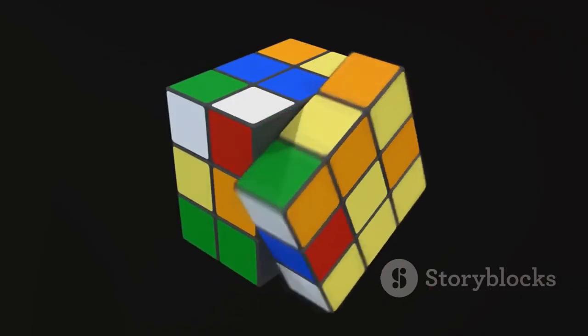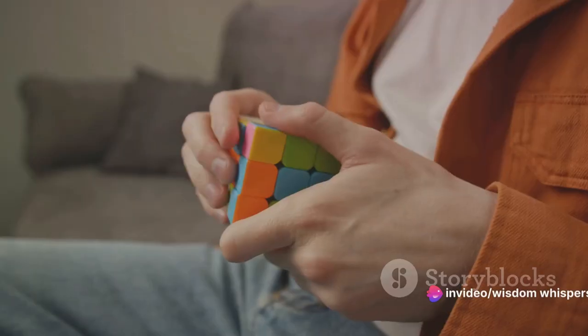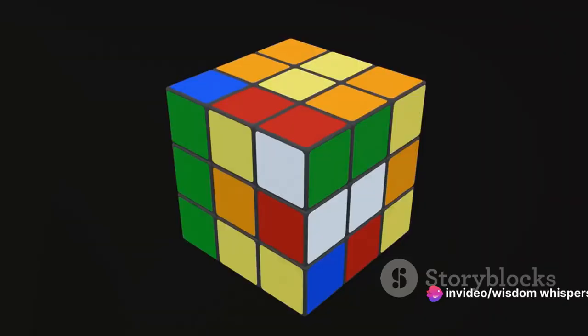Next up we have the edge pieces. These are the pieces with two colors. They sit between the centers and corners. There are 12 in total, each unique, and they form the bridge between the center and corner pieces.